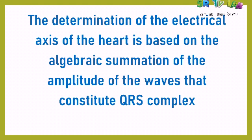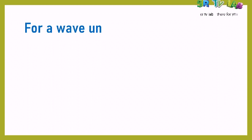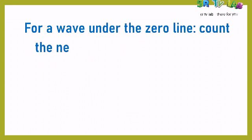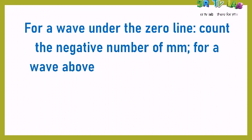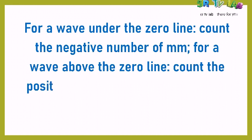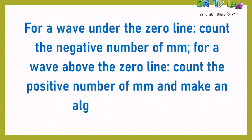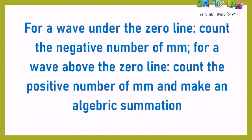The waves that make up the QRS complex are Q, R, and S waves. For a wave under the zero line, which is the electric baseline, you count it as a negative number. For a wave above the zero line, count the positive number of millimeters and make an algebraic summation of those waves.